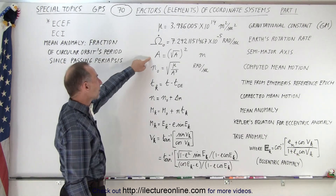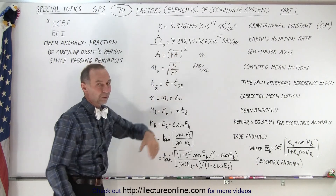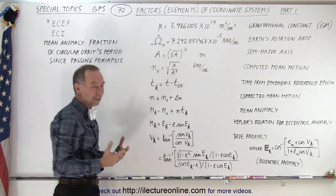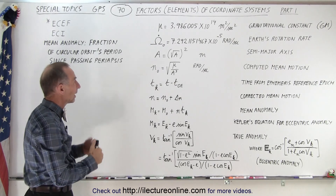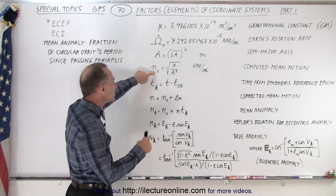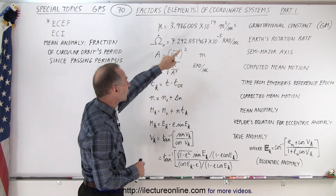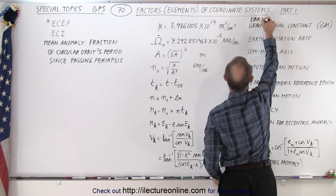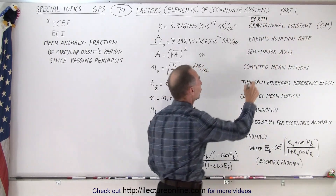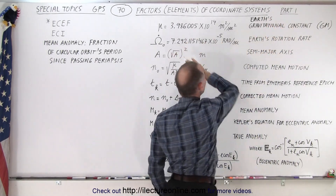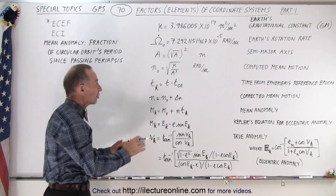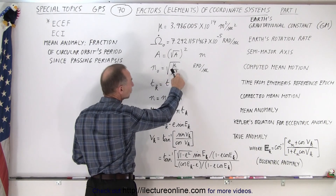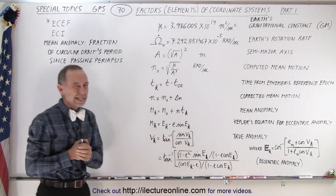Then we have what we call the semi-major axis, which is equal to the square root of the semi-major axis squared. We have it written like that because this is the way the ephemeris data is sent to us from the satellite down to the receivers — we then have to square that number to get the actual value. It's used in what is called the computed mean motion, which is equal to the square root of mu, the Earth's gravitational constant, divided by the semi-major axis cubed, then taking the square root of that.